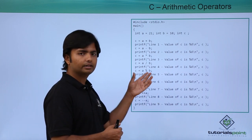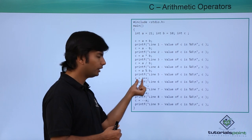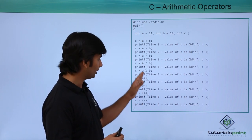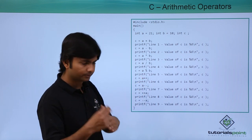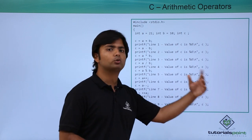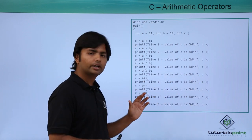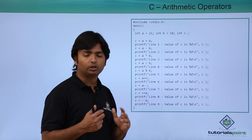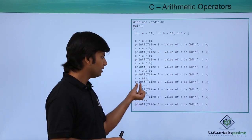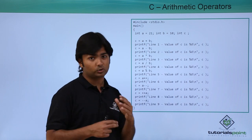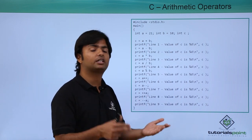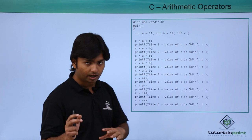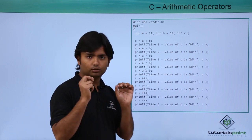So here, if a is 21, c will get 21 first, and after that a will become 22. When you print c you will find 21. Then for post-decrement, the assignment takes place before the decrement. So the value of a, which is now 22, will be assigned to c, and later the value will be decremented back to 21. When you print here you will get 22, but the value of a is back to 21.